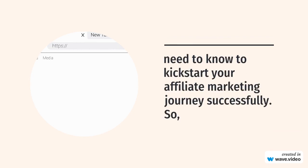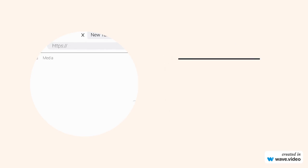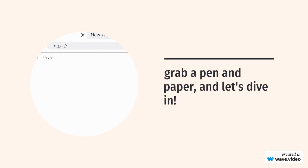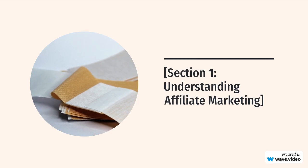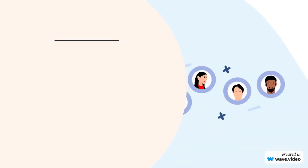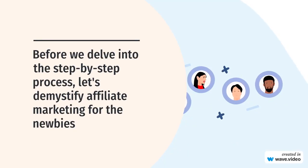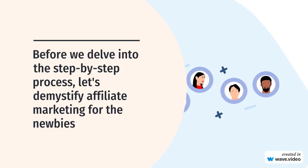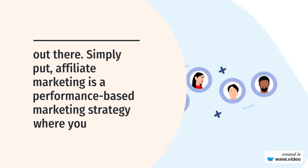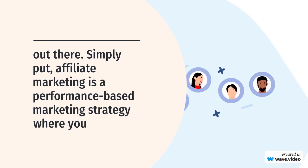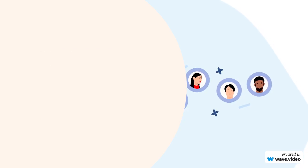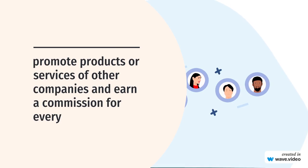Grab a pen and paper, and let's dive in. Section 1: Understanding Affiliate Marketing. Before we delve into the step-by-step process, let's demystify affiliate marketing for the newbies out there. Simply put, affiliate marketing is a performance-based marketing strategy where you promote products or services of other companies and earn a commission for every sale or action made through your unique affiliate link.